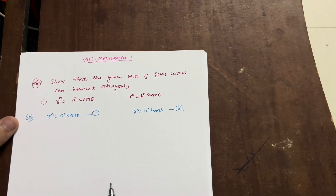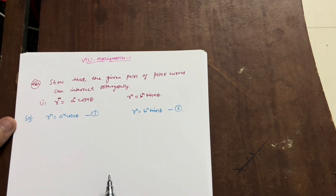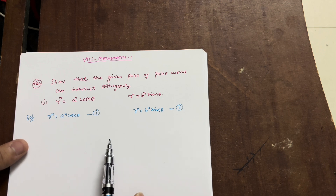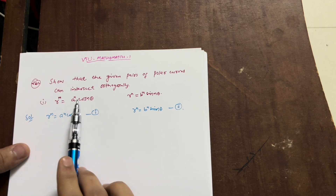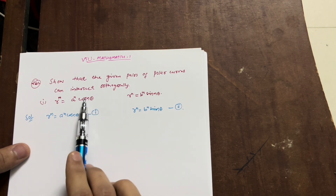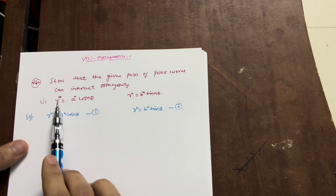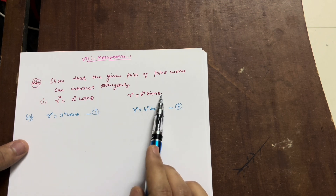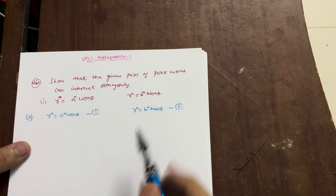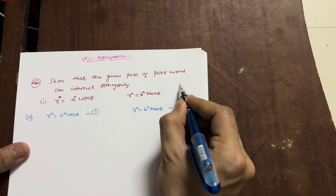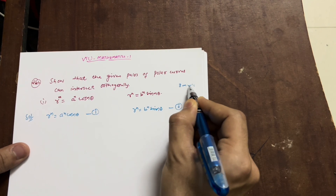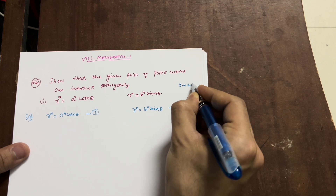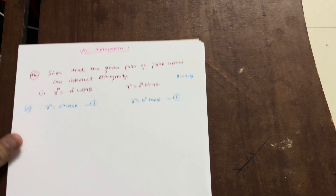Welcome students to another video. In this video I will discuss an important question: show that the given pair of polar curves can intersect orthogonally — r^n = a^n cos(nθ) and r^n = b^n sin(nθ). These are the two curves. It is an eight marks question as far as the V2 examinations are concerned.